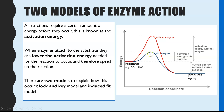This graph shows the amount of energy the reactants have. Without an enzyme, you would need a higher level of energy for the reaction to occur. If you add in an enzyme, it lowers the amount of energy needed for the reaction to occur — in other words, it lowers the activation energy.